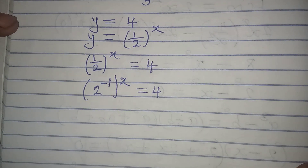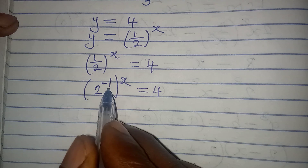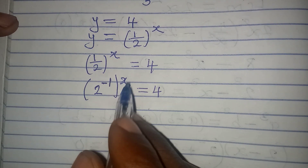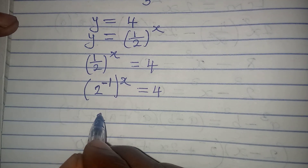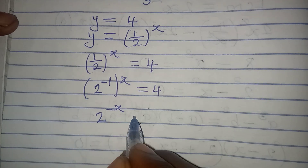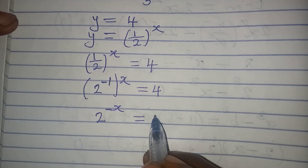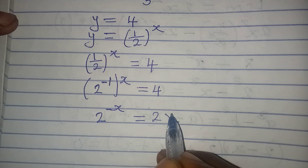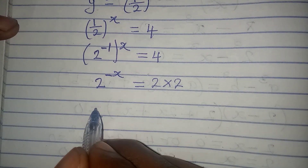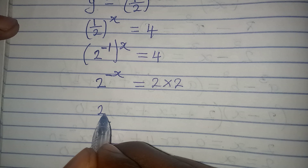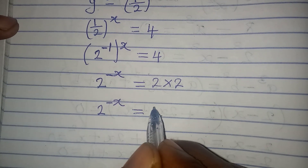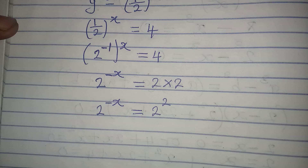The next step is to clear out the bracket. We get 2 to the power of negative X, and it's equal to 4. Now 4 is 2 times 2, so we have 2 to the power of negative X equal to 2 to the power of 2.